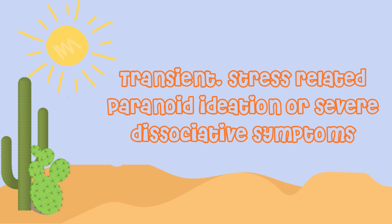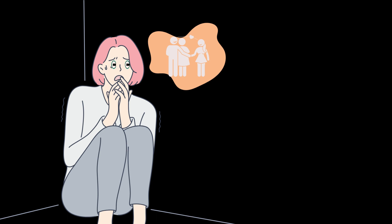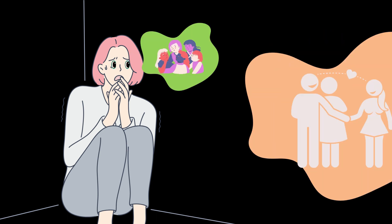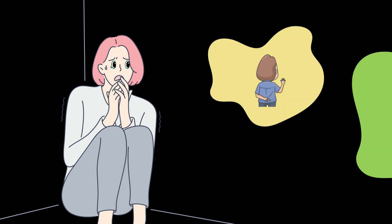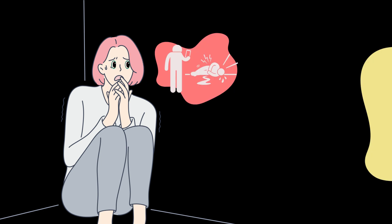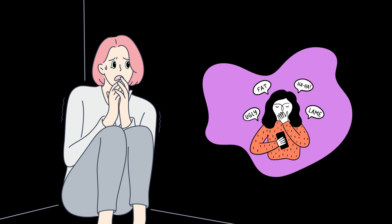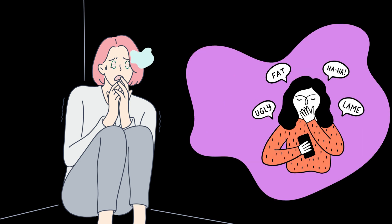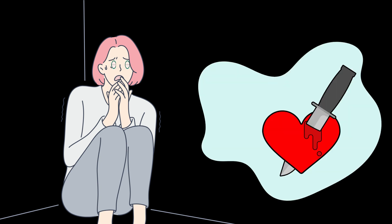The ninth criterion is transient stress-related paranoid ideation or severe dissociative symptoms. This type of paranoid ideation is different from what you most often hear about — it is transient, meaning it comes and goes, occurring when they are under stress. When this transient paranoia comes, they may suspect others are conspiring against them, even people they would normally trust.